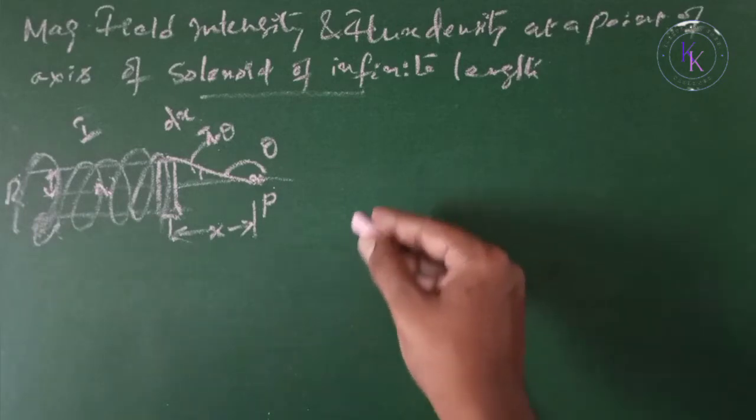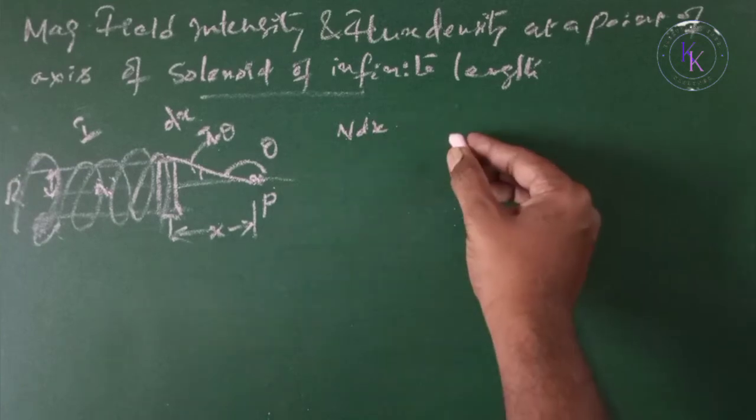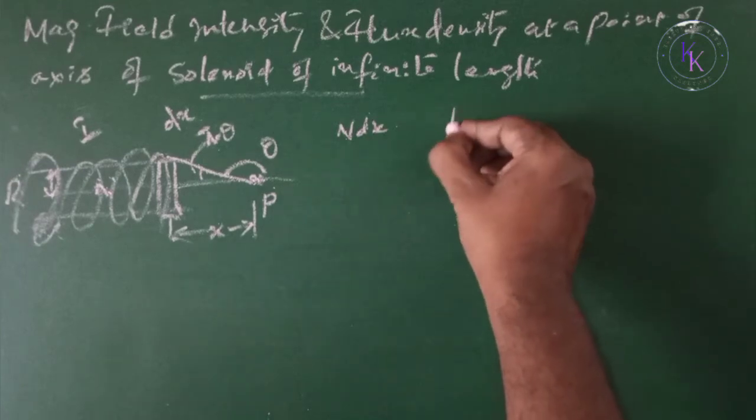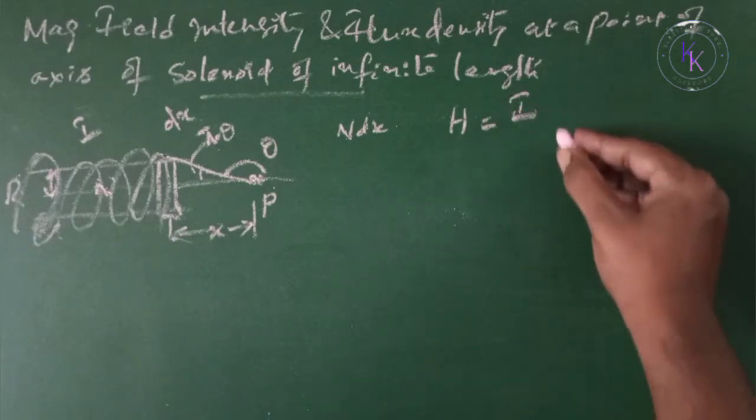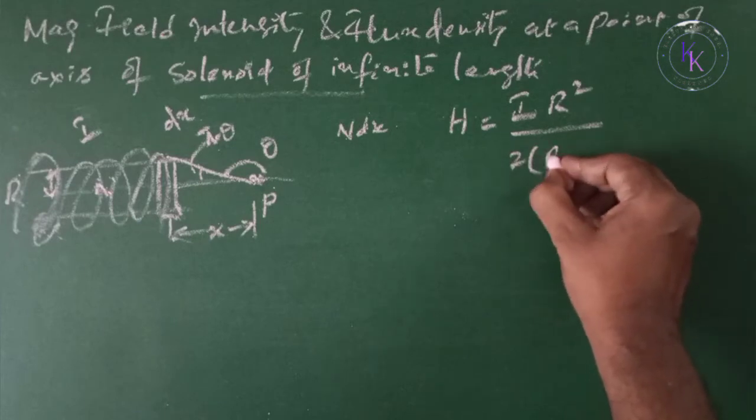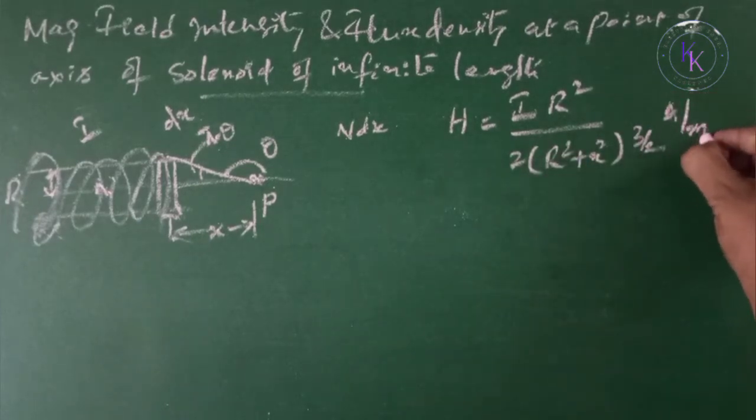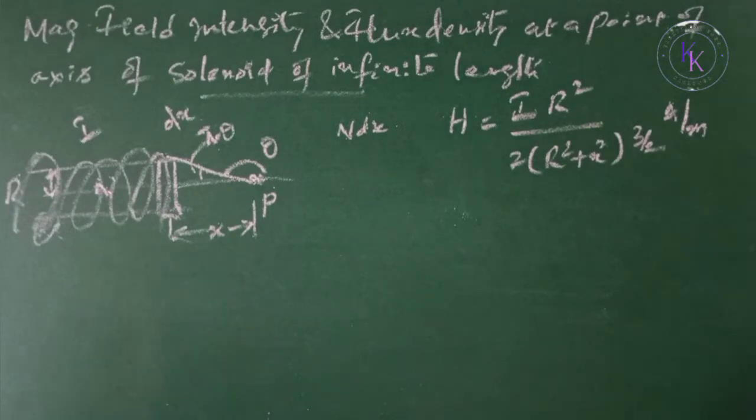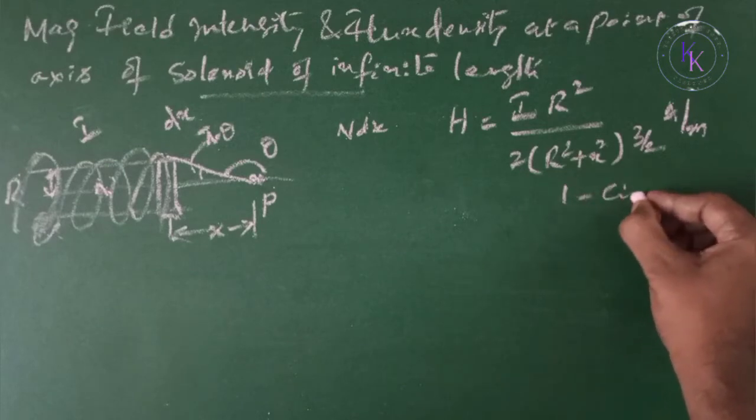So number of turns in elementary length is given by N dx. We have already derived the formula for H in the previous videos. H equals to I R squared divided by 2(R² + x²)^(3/2) amperes per meter in magnitude. And the direction of H is given by right hand screw rule. Now this is the case of one circular loop.